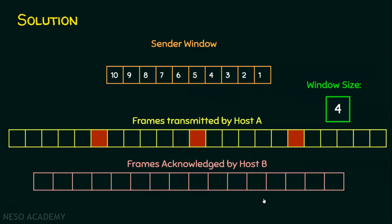The sender starts with frame 1, which is transmitted. The sliding window now contains only frame 1, but the sender can send up to 4 frames. So frame 2 is sent, the window slides; frame 3 is sent, window slides; frame 4 is sent, and the window slides to its maximum size of 4. The sender will not send any more packets before getting an acknowledgement for frame 1.